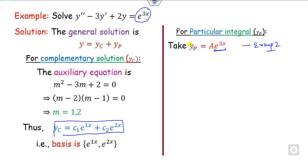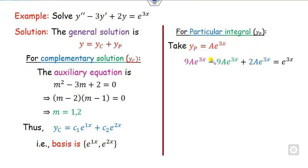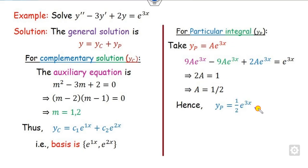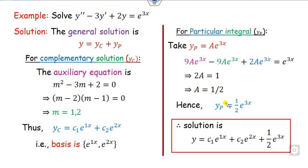With yp = Ae^(3x), we find y' = 3Ae^(3x) and y'' = 9Ae^(3x). Substituting all these values into the differential equation and simplifying, we can find the value of A easily. Comparing coefficients, 2A = 1, so A = 1/2. Therefore yp = (1/2)e^(3x). The general solution is y = yc + yp, giving the required solution.